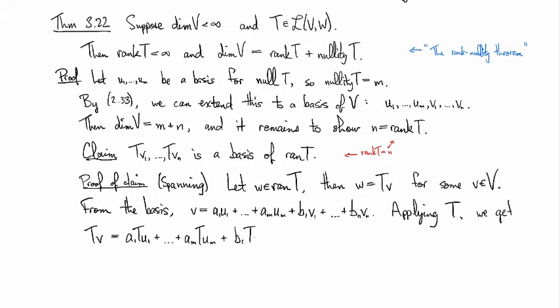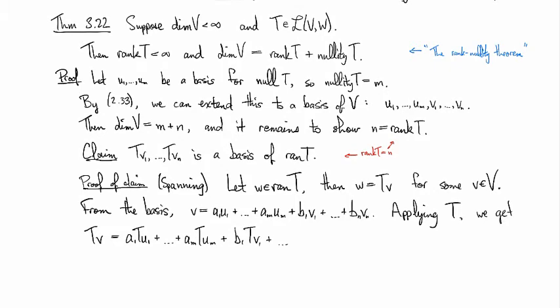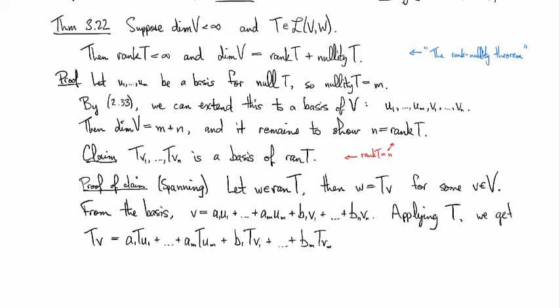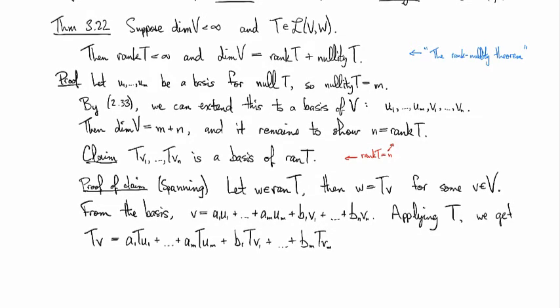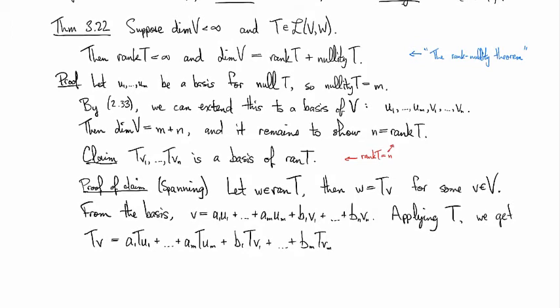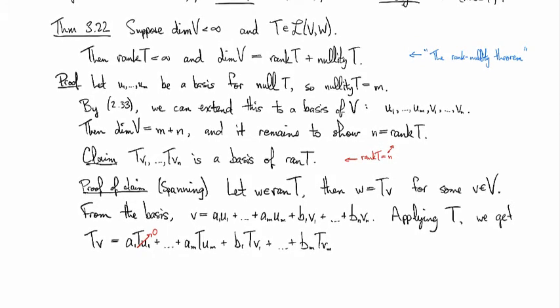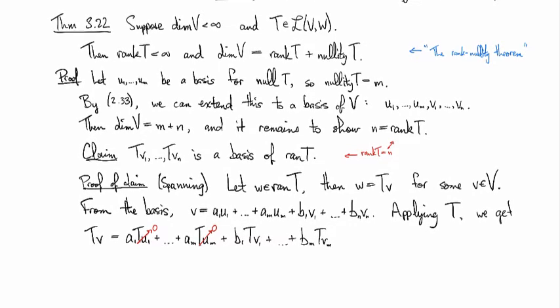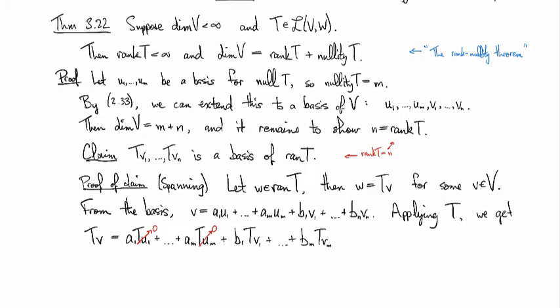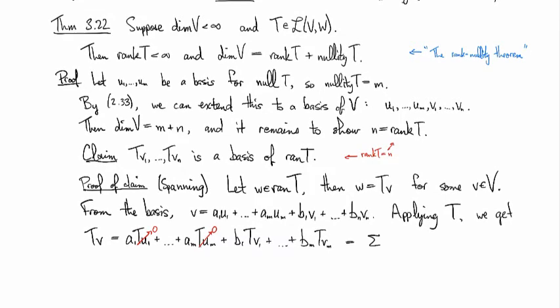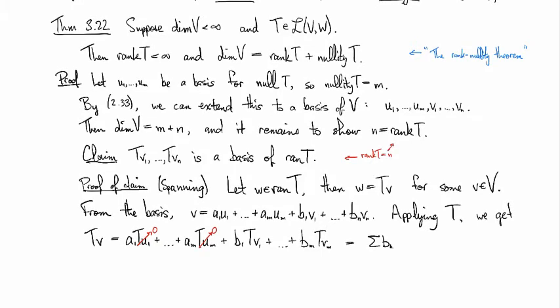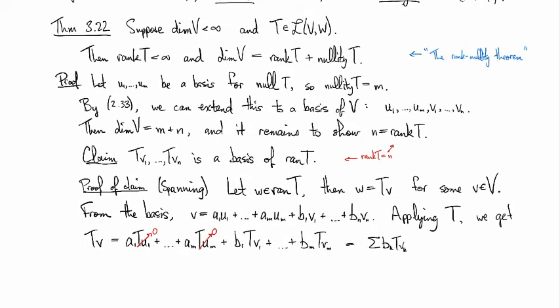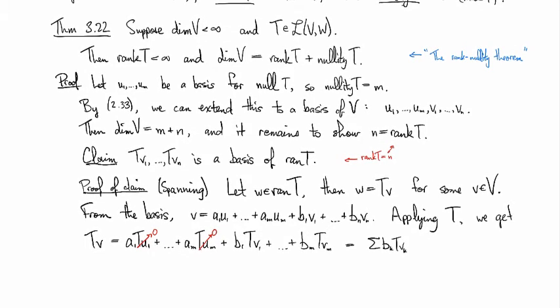And b1Tv1 up through bmTvm. But then because the u's are basis for the null space, there are elements of the null space, and that means each of these terms is going to be equal to zero. So we have just the linear combination of the Tvk's.